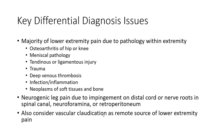Key differential diagnosis issue: the majority of lower extremity pain is due to pathology within the extremity. Also consider arthritis of hip or knee, meniscal pathology, tendon or ligamentous injury, trauma, deep venous thrombosis, infection, inflammation, and neoplasm of soft tissue and bone. Neurogenic leg pain due to impingement on the distal cord or nerve roots in the spinal canal, neuroforamina, or retroperitoneal plexus. Also consider vascular claudication as a remote source of lower extremity pain.